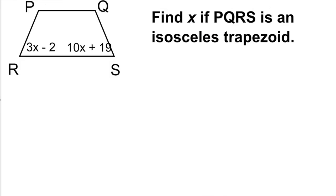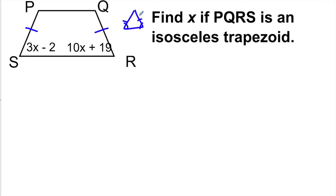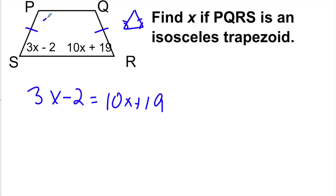Now I'm going to find X if PQRS is an isosceles trapezoid — with S and R positions corrected for labeling consistency. Remember, in an isosceles trapezoid, just as with an isosceles triangle, the base angles opposite the congruent sides are congruent. So 3X − 2 is congruent to 10X + 19. The other pair of base angles are also congruent to each other.